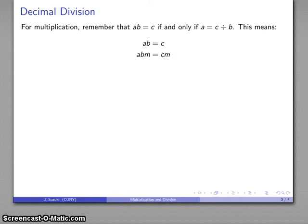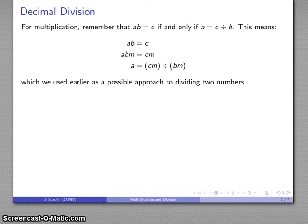Well, something I can do is if I multiply everything by the same number M, then again, associativity gives me the quotient A is CM divided by BM. So if A is C divided by B, A is also C times M divided by B times M. Which we used as an earlier approach to dividing two numbers.